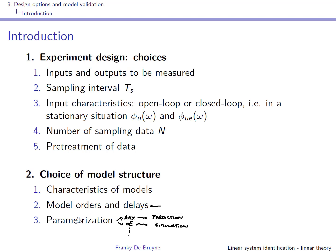Once you have chosen your parametrization, you have to look at the model orders and choose the delay. For instance, if it's an ARX model, you have to choose NA and NB, and you have to choose the delay NK. The model orders are very important because of the phenomenon of overfitting. Choosing NA and NB too large will give rise to problems. But if you split your data set in two — one for estimation and one for validation — and look at the validation costs, nothing can go wrong.